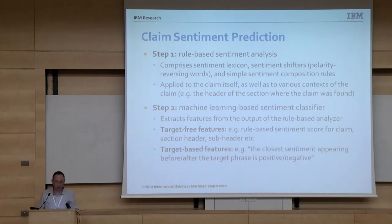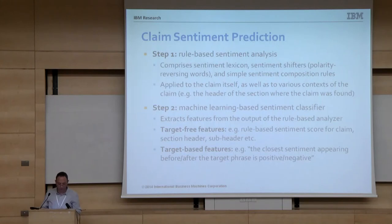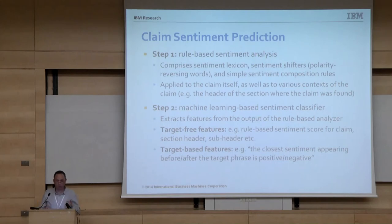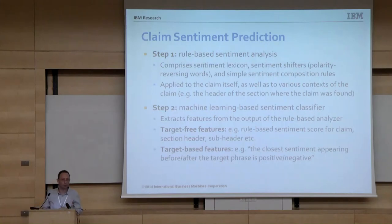Once the target is extracted from the claim, we compute the sentiment in a two-stage process. First, we perform rule-based sentiment analysis based on a sentiment lexicon, a list of sentiment shifters that reverse polarity, and simple sentiment composition rules — applied to the claim itself as well as some context, such as the section header where the claim was found. Then we extract features from these results and train a classifier. Some features take into account the target — for example, the polarity of the first sentiment word after the target — and others are independent of the target, like the overall count of positive and negative sentiment words in the claim.